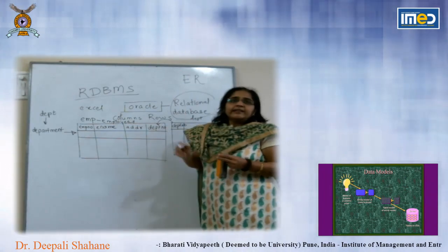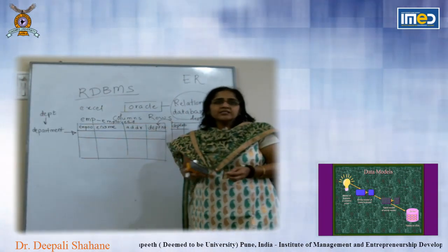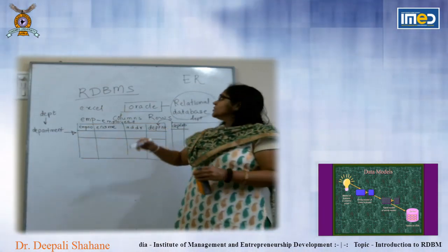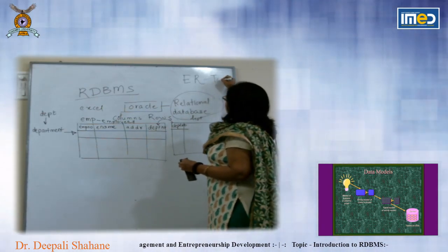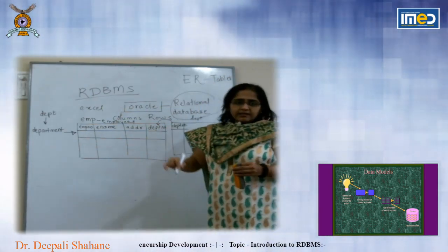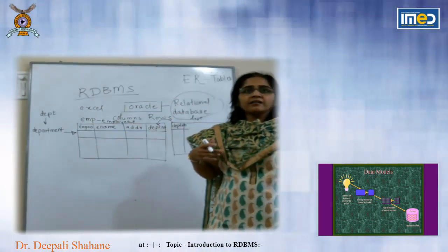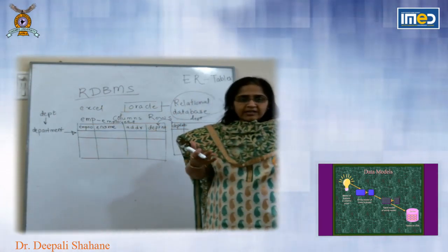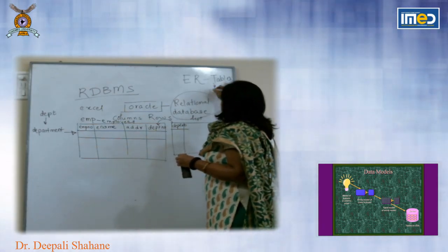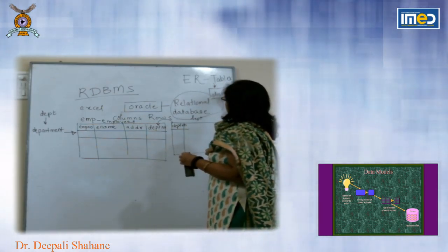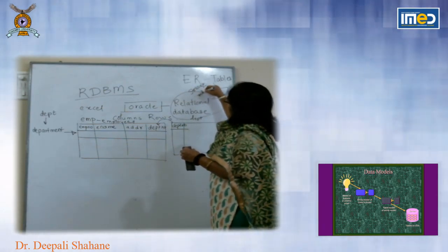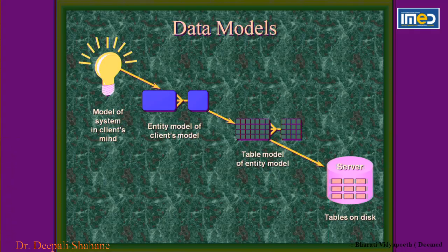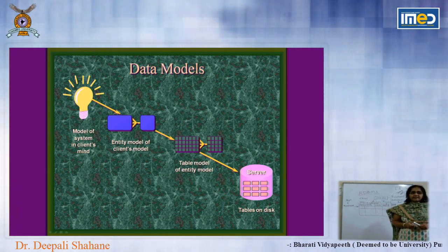ER stands for Entity Relationship model. We have already seen this concept in database management. Based on this particular ER model, different tables are designed. When these tables are connected to each other and designed in such a way that they have relations with each other, they will be stored on the disk — that is the storage media — and then the model will come into existence. Data models are the key part of the design process.